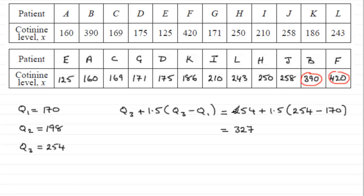So just to finish this off, I would say that therefore the outliers are the patients. And we just need to name those patients, and they're going to be B and F.